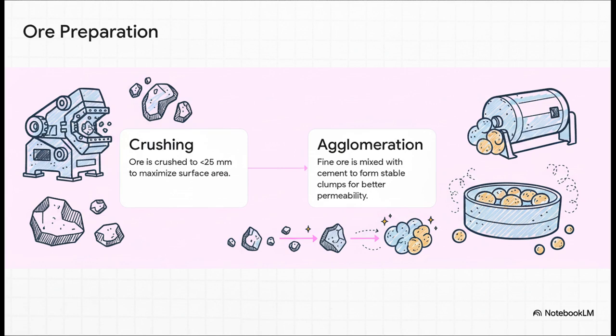The second step is something called agglomeration. See, if you just have a bunch of fine dust and clay, it would turn into a muddy, waterproof mess. So they tumble the crushed ore with a bit of cement to create these stable little clumps. That ensures our magic liquid can actually trickle through the entire pile.